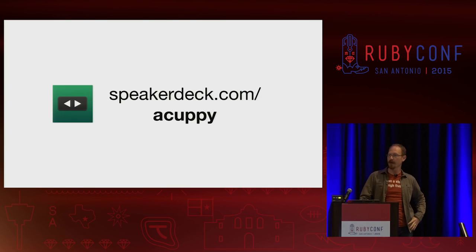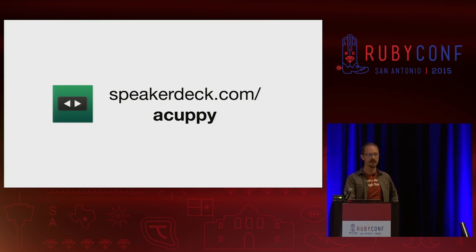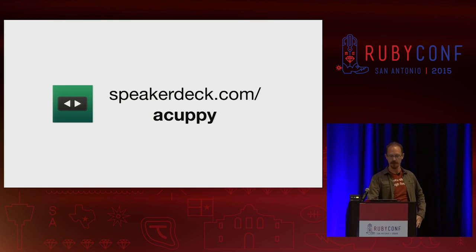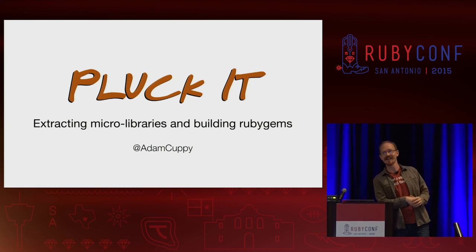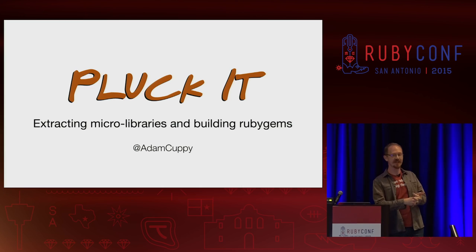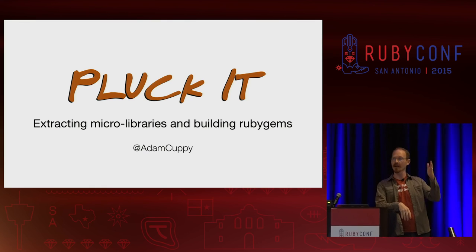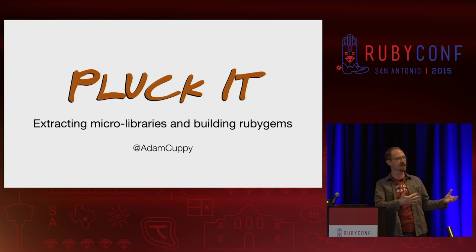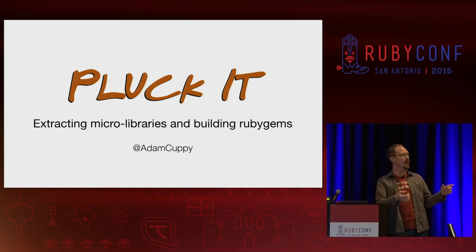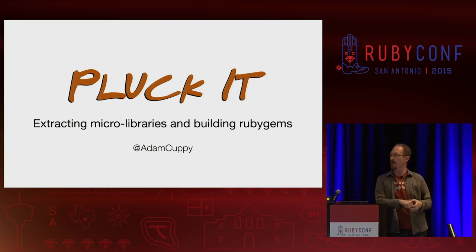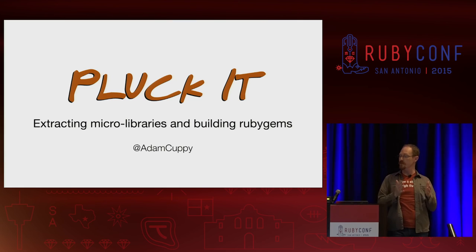This is going to be available on Speaker Deck — I'm going to publish it within the next half hour after this talk is completed. This talk is affectionately titled 'Pluck It,' which is about extracting micro libraries and building Ruby gems. This track is about less code, and throughout our time as a consultancy and my time as a Ruby engineer, we found there's a lot of really awesome opportunities to pull out gems that are less than 100 lines of code. They don't need to be big at all, and it's really beneficial for a multitude of reasons.